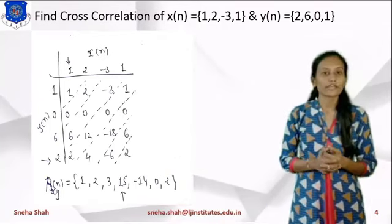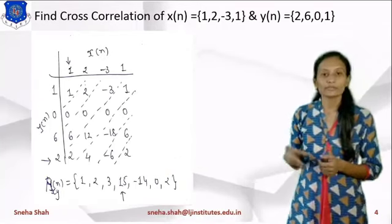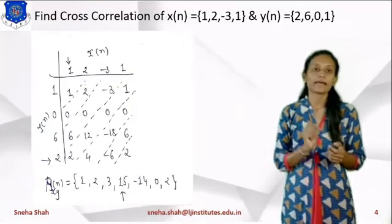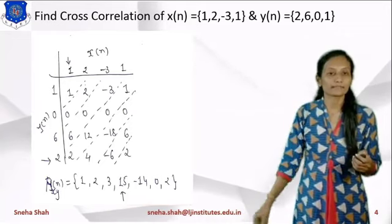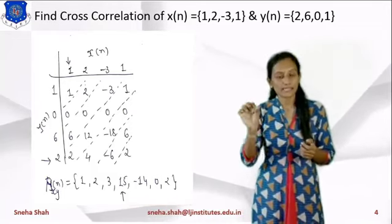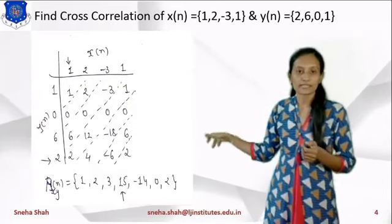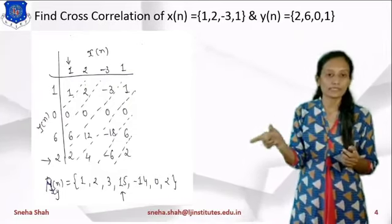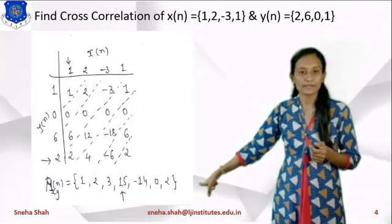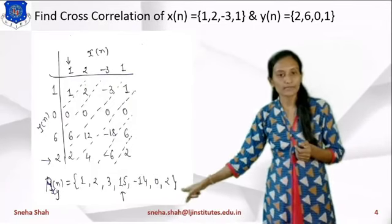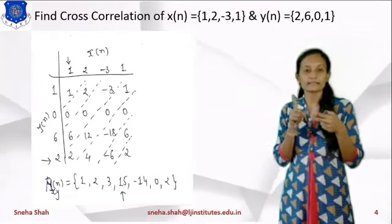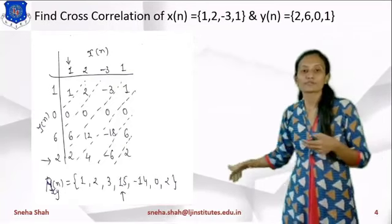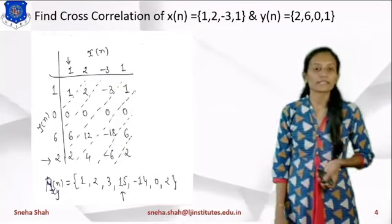Now where do we place the arrow? In x(n) the arrow is below the first term, so the range is 0 to 3. For y(n), the arrow is below the last term, so its range is -3 to 0. So 0 + (-3) = -3. The answer starts from n = -3, so the terms are at n = -3, -2, -1, and the fourth term is at n = 0, so below the fourth term we draw the arrow.